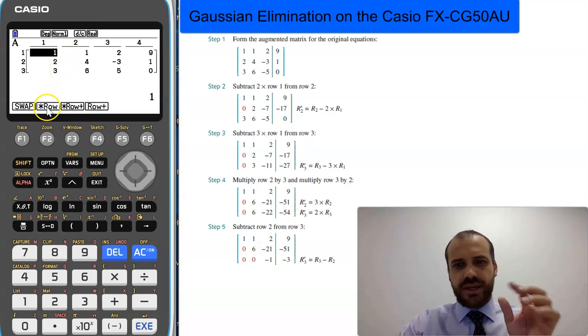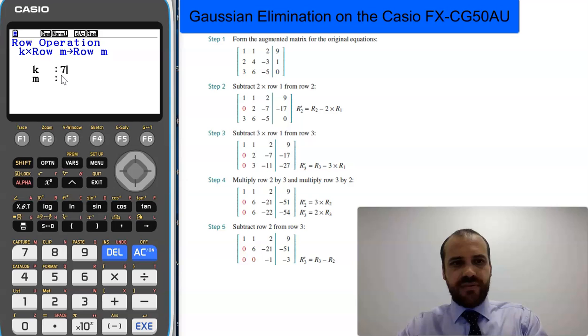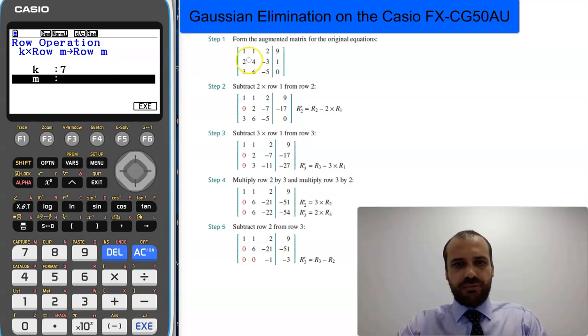Now the next one's also really easy. That's just multiplying a row by a scalar. So if I want to take, let's say, the number 7 and multiply row 1 by 7, I just do this. That's going to take row 1 and multiply it by the number 7.